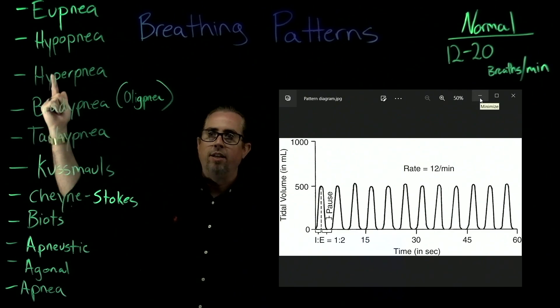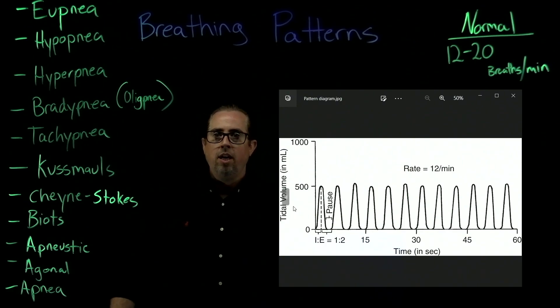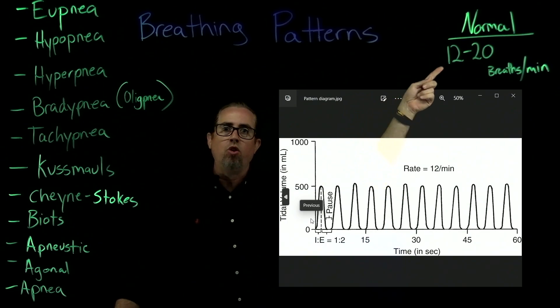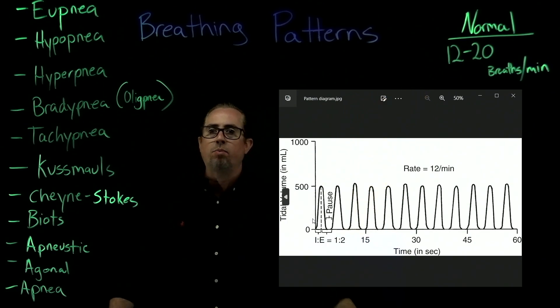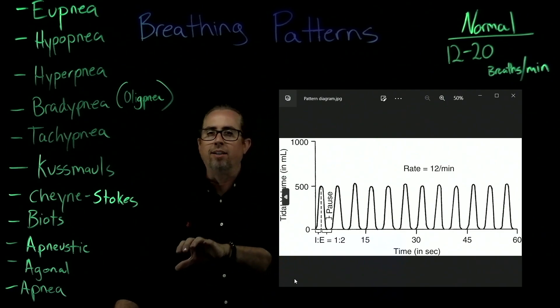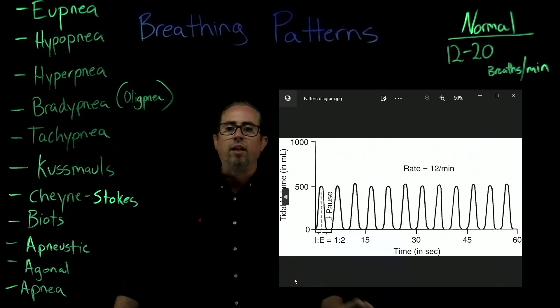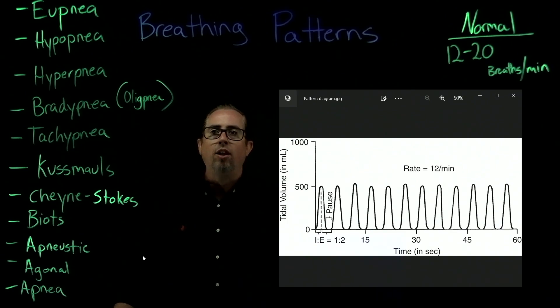Let's go down the list: hypopnea. You can go to the fourth one on the list, which is bradypnea. These can be associated and combined. This means anything that's consistent and normal but with less than 12 breaths per minute. Think of it like bradycardia, but this is breathing. Bradypnea is slow breathing. That's what it means—slow or shallow breathing. Hypopnea, bradypnea. Hypo means low.